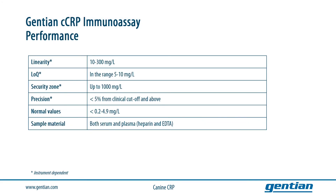Here is an overview of the most important performance characteristics of the assay. The linearity range spans from 10 to 300 mg per litre, with an LLoQ around 5 to 10 mg per litre and a measuring range up to 1000 mg per litre depending on the instrument. The precision is very good, with low CVs from clinical cut-off value and above, and normal values for healthy dogs are in the range of 0.2 to 4.9 mg per litre. As sample material, you can use both serum and plasma blood samples.